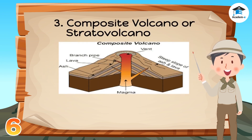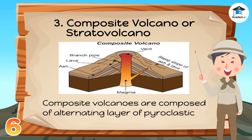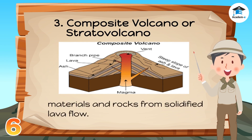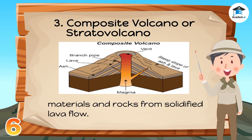Composite volcano, or stratovolcano, is composed of alternating layers of pyroclastic materials and rocks from solidified lava flow. The sides of this volcano are very steep because the thick lava during eruption is not able to flow very far down the slope before it cools down.